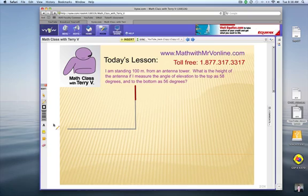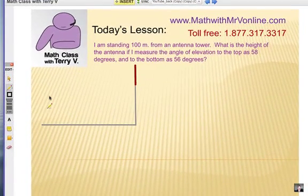This question is from one of my YouTube viewers and it involves some trig and angle of elevation. I am standing 100 meters from an antenna tower. What's the height of the antenna if I measure the angle of elevation to the top as 58 and to the bottom as 56? Well let's interpret this.